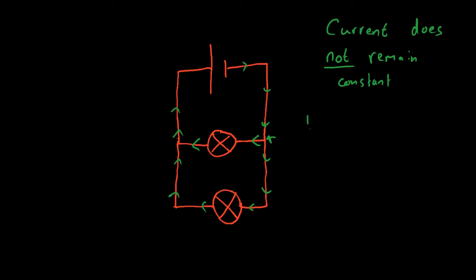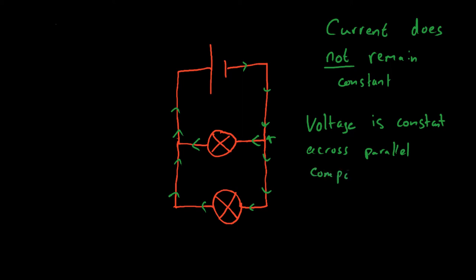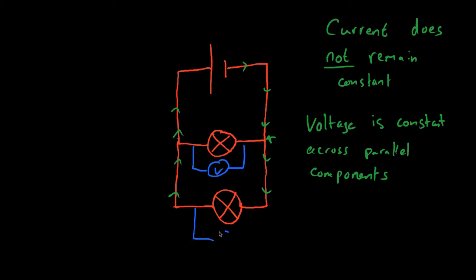What else is different? Well, the voltage is constant across parallel components. If I took the voltage across this bulb and the voltage across this bulb, and let's pretend that my power supply was giving 6 volts of power, your voltage across each is 6 volts. And that is certainly different to a series circuit as well, because in a series circuit the voltage is split — the potential difference across all the components adds up to give the voltage from the power supply. However, this time they don't.